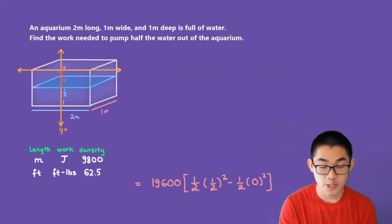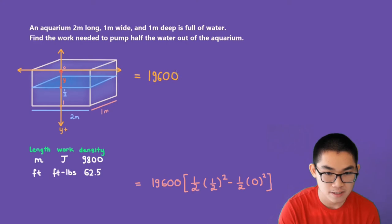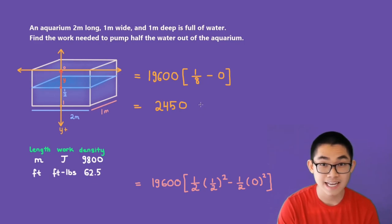Now 1 over 2 to the power of 2 is 1 over 4, and 1 over 4 times 1 over 2 gives you 1 over 8. So this is equal to 19,600 times 1 over 8, and this will simply give you 0, so minus 0. And now 19,600 times 1 over 8 will give you 2,450.